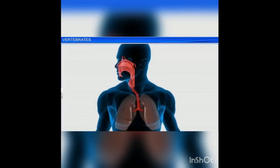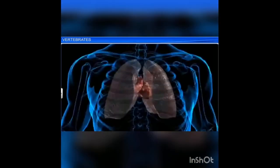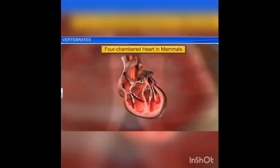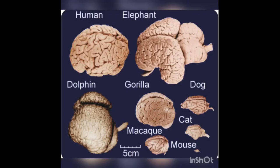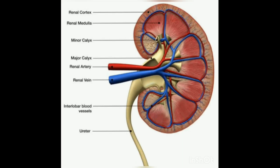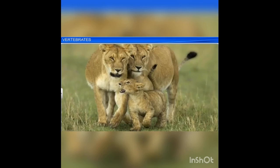They respire by lungs and the heart is four-chambered, possessing a left systemic arch. Mature red blood cells are circular, biconcave, and non-nucleated. Mammals have a large brain and show the greatest intelligence compared to other animals. Their kidneys are metanephric and they are ureotelic. All are homeothermic; sexes are separate and fertilization is internal.